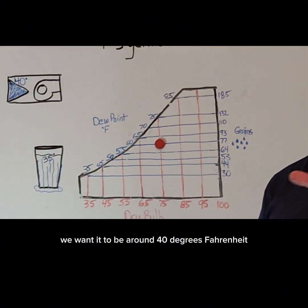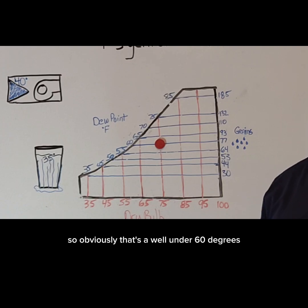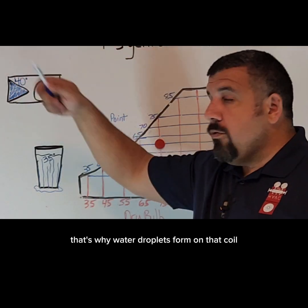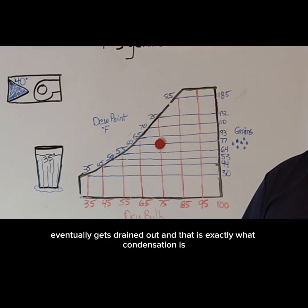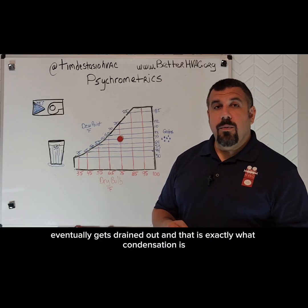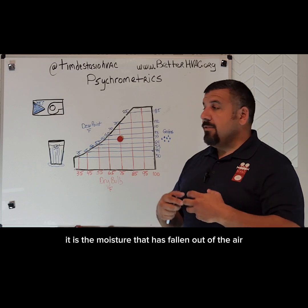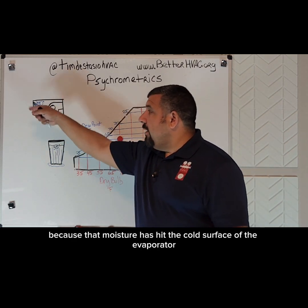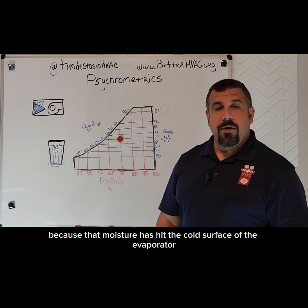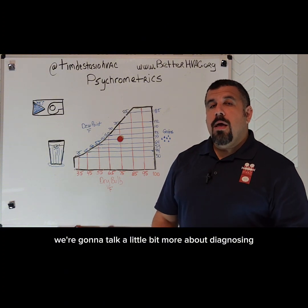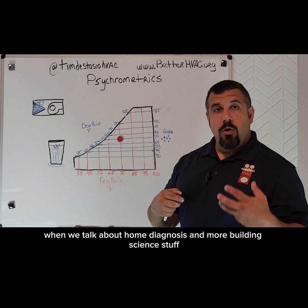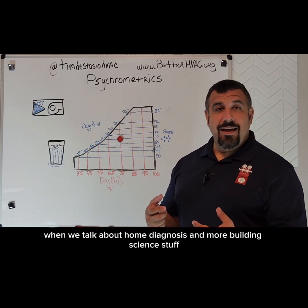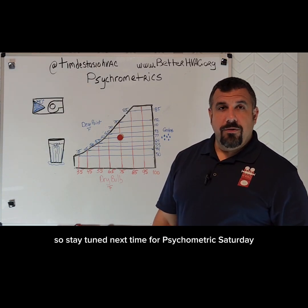Our evaporator coil, we want it to be around 40 degrees Fahrenheit — well under 60 degrees. That's why water droplets form on that coil. It eventually runs down to the pan and gets drained out. That is exactly what condensation is: it is the moisture that has fallen out of the air because it hit the cold surface of the evaporator. We're going to talk more about diagnosing using dew point in our next episode when we talk about home diagnosis and building science. Stay tuned next time for Psychrometric Saturday.